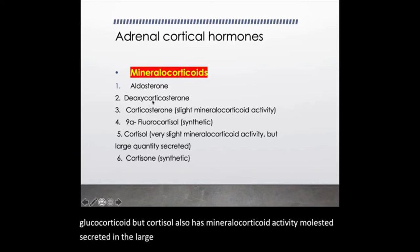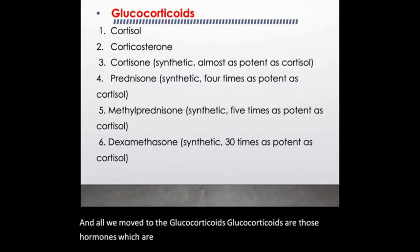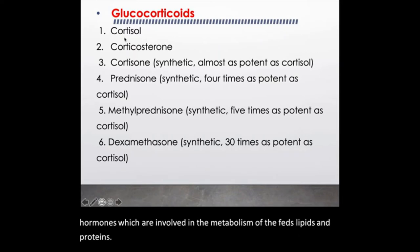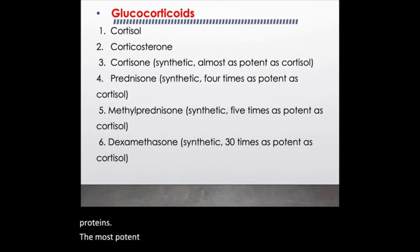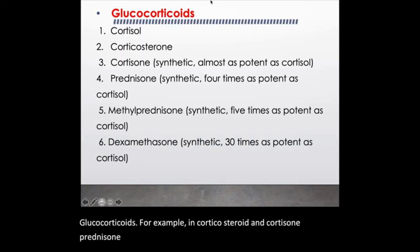Now we move to the glucocorticoids. Glucocorticoids are those hormones which are involved in the metabolism of fats, lipids, and proteins. The most potent glucocorticoid is cortisol. Other glucocorticoids include corticosterone, cortisone, prednisone, methylprednisolone, and dexamethasone.